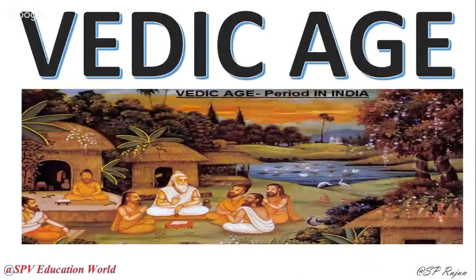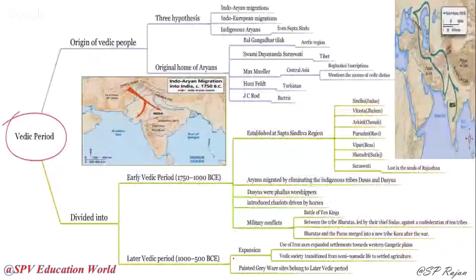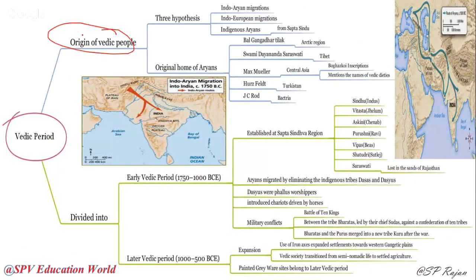Now we see Vedic culture — from the stone age and Indus Valley Civilization, the Vedic age is where Vedic literature started. I am SP Rajan explaining through SPV Education. The Vedic period: we will see the origin of Vedic people. There are several hypotheses about how the Vedic people originated in India.